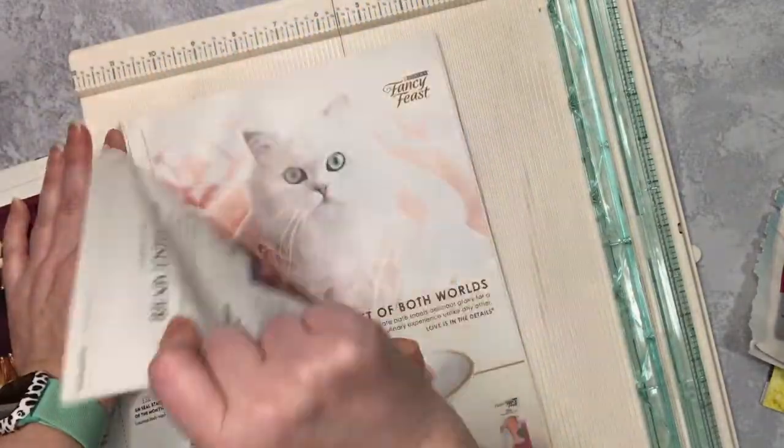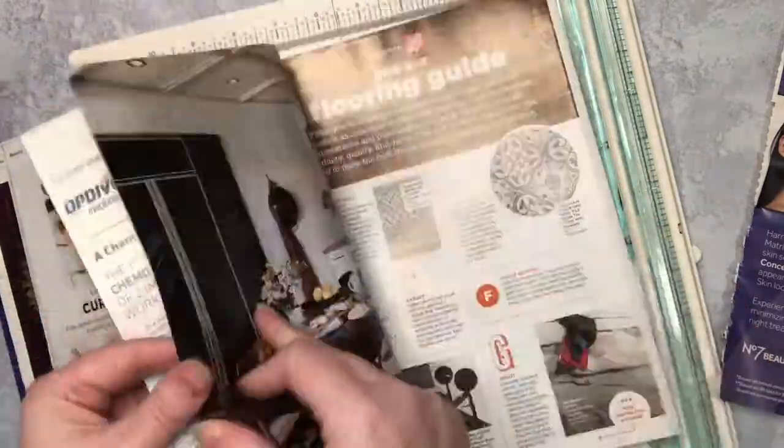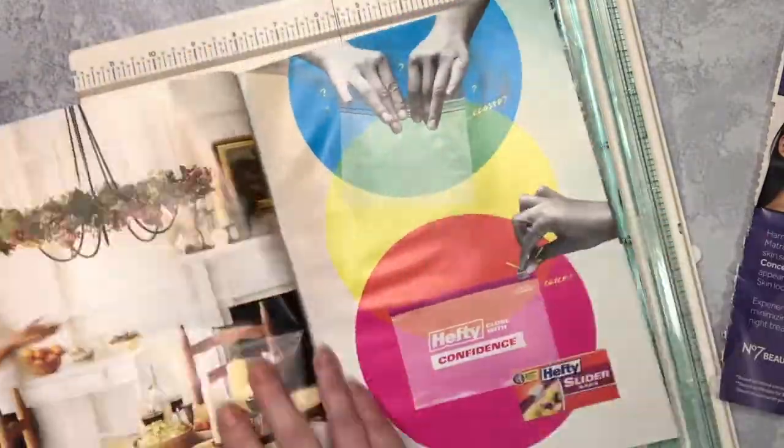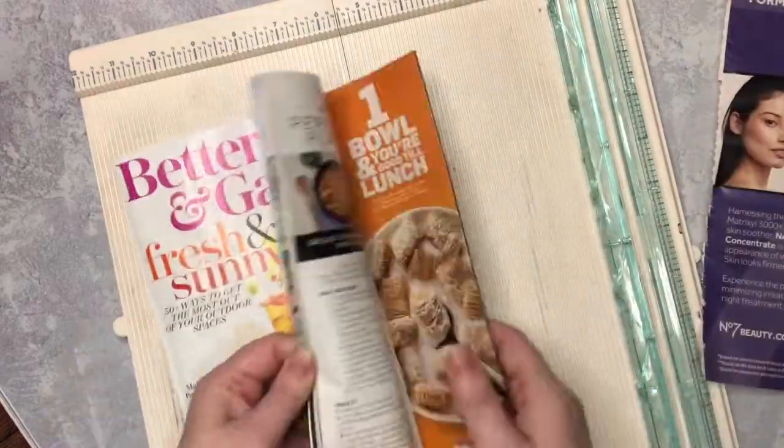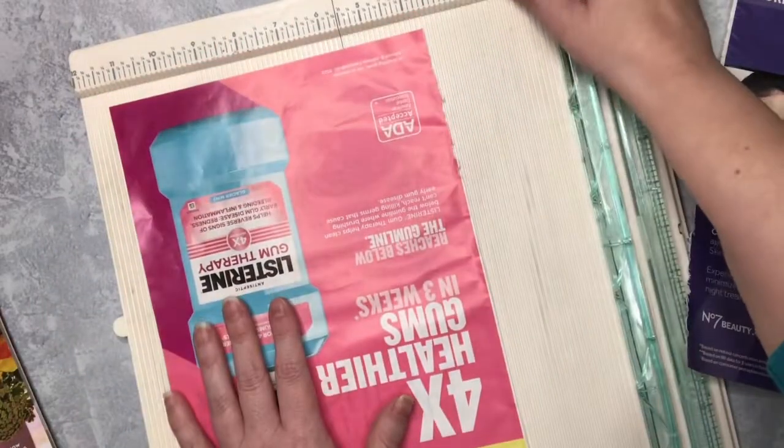Of course you would need more pages and more strips if you wanted bigger earrings, or maybe you want to get creative and do two coil circles. So anyway I end up with, I pull three sheets and cut them up and end up with six strips.